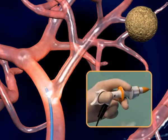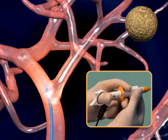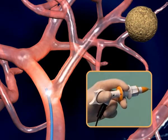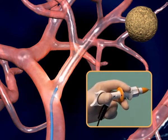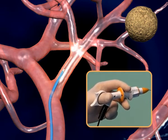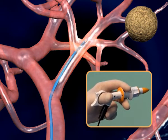When reaching another airway bifurcation, the catheters are again pushed forward and steered by manipulating the handle.